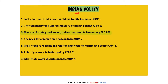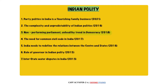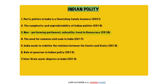This topic is related to Indian politics. We are going to discuss this as the third topic. Previously we have already discussed 3 to 4 topics — party politics in India as a flourishing family business, complexity and unpredictability of Indian politics, and the need for a common civil code. You can directly visit our Paper 2 answer writing page where you will find the model essay of 300 words — how to write the introduction, body, and conclusion.